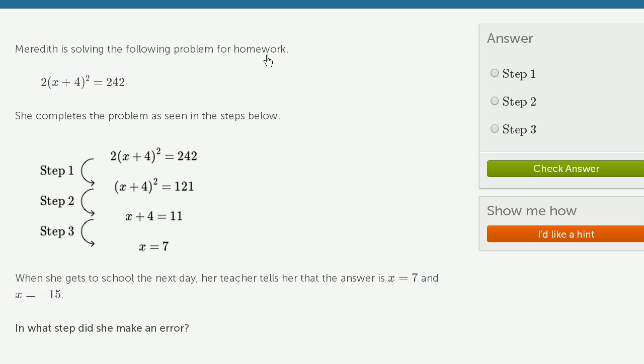Meredith is solving the following problem for homework: 2 times the quantity x plus 4 squared is equal to 242. She completes the problem as seen in the steps below, and they give us the steps right over here.